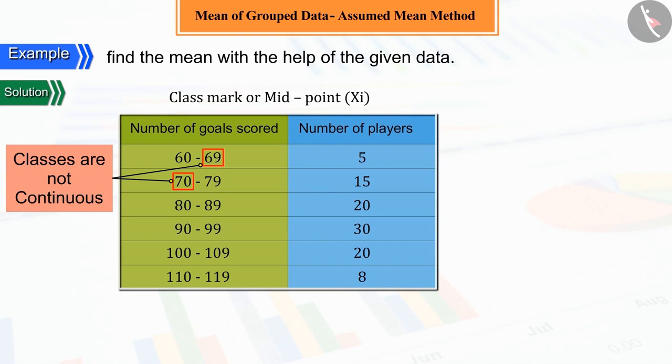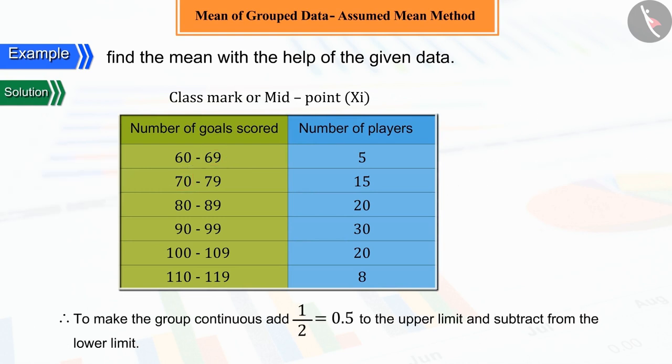Well done! We can see from the table that the difference between upper and lower limits is 1. So, to make the class continuous, let's add half, that is 0.5, to the upper limit and subtract the same from the lower limit.